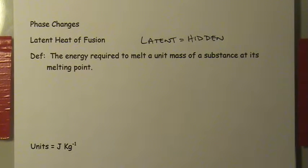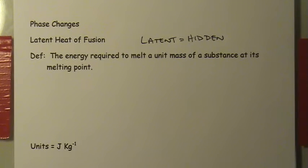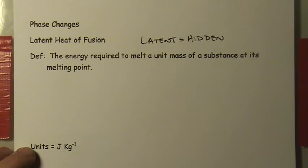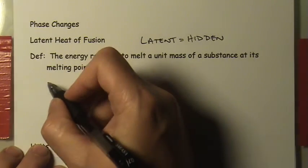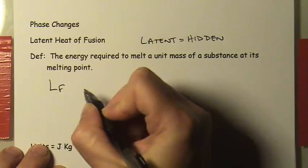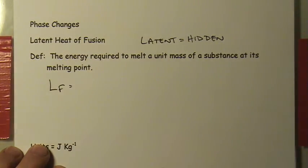The definition of the latent heat of fusion is the energy required to melt a unit mass of a substance — that means one kilogram — at its melting point. It's really important that the latent heat of fusion only applies once the substance reaches the specific temperature at which it melts. All substances have a melting point at standard pressure. The symbol we use is L_F.